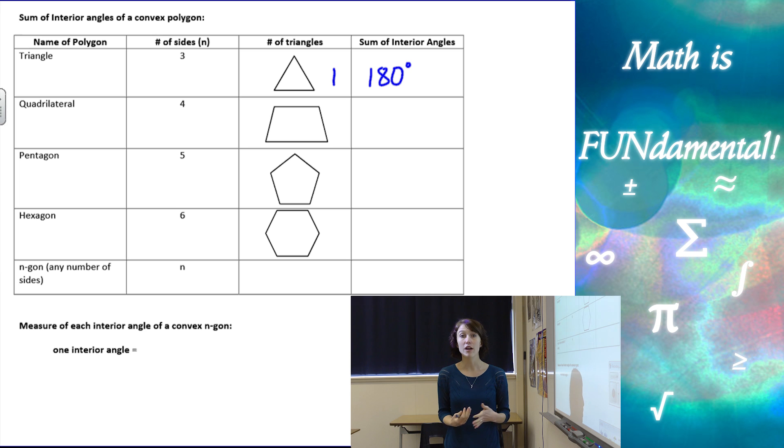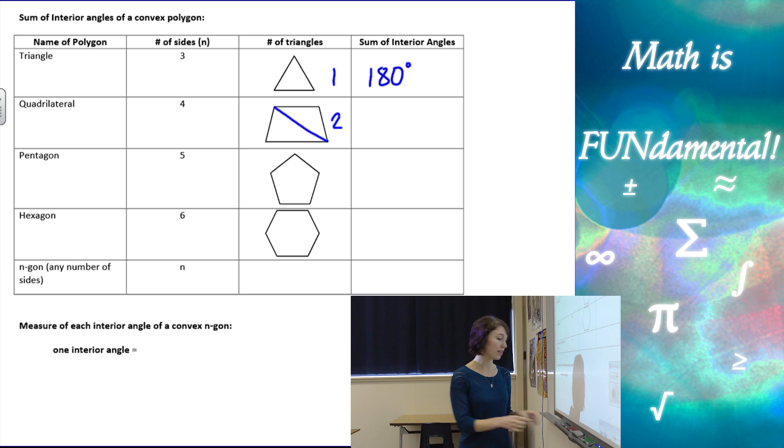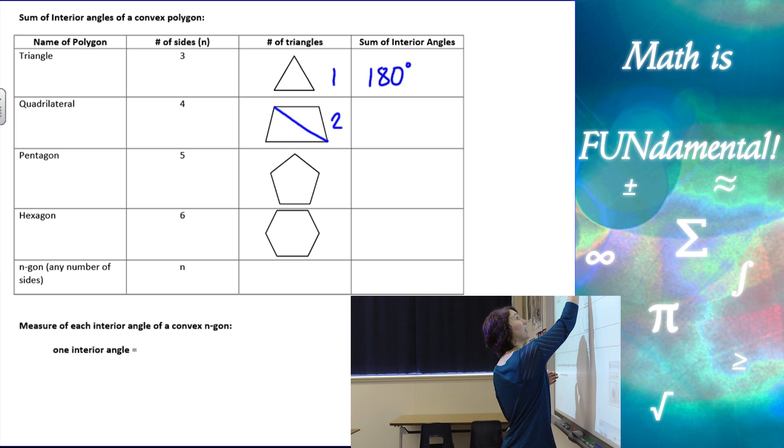The next one, we have a quadrilateral, which is four sides. I can take any vertex and connect it to the opposite one and create two triangles. If I have two triangles, then when I find the angle measurements of this triangle here, and then I add it to the angle measurements of this one here in a different color,